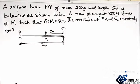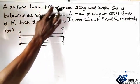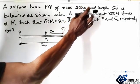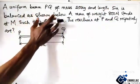Welcome to MilaConline tutorial. Before us is this question that says a uniform beam PQ of mass 20 kg and length 5 meter is balanced as shown below.